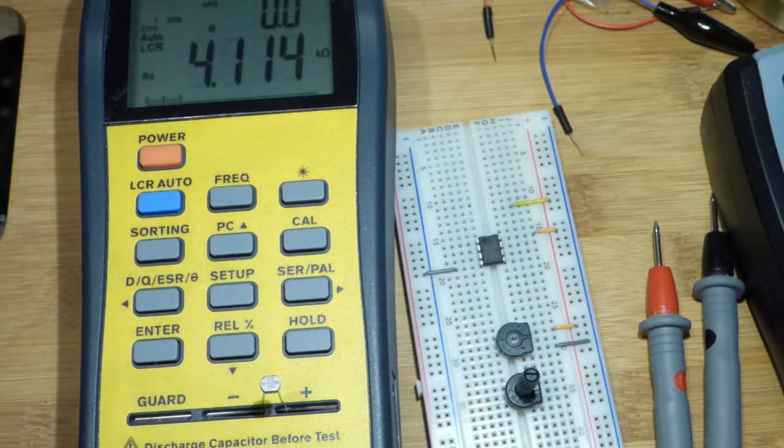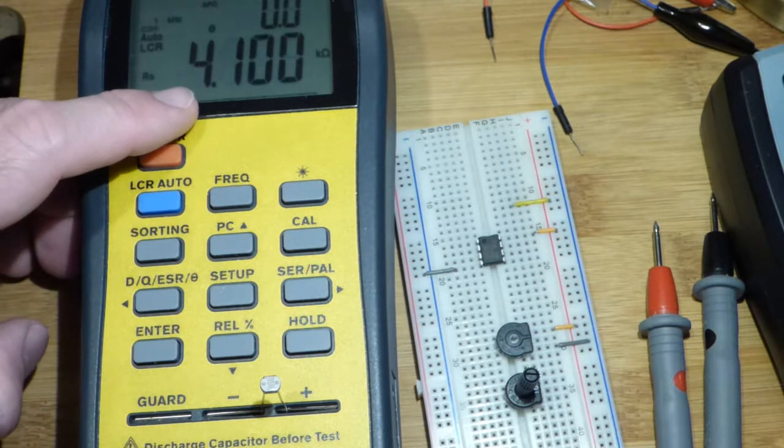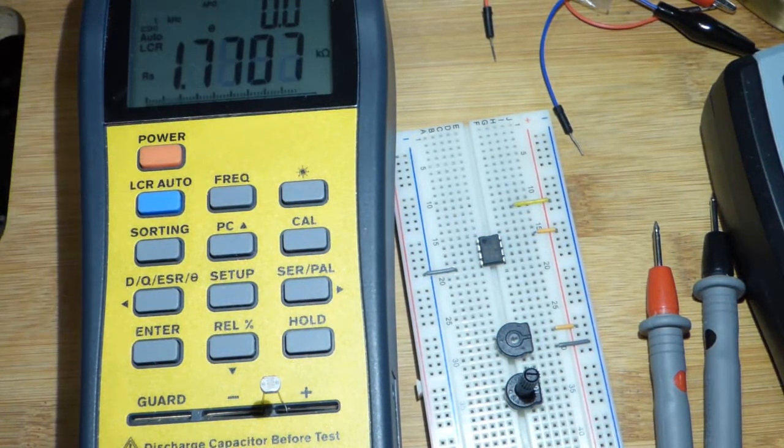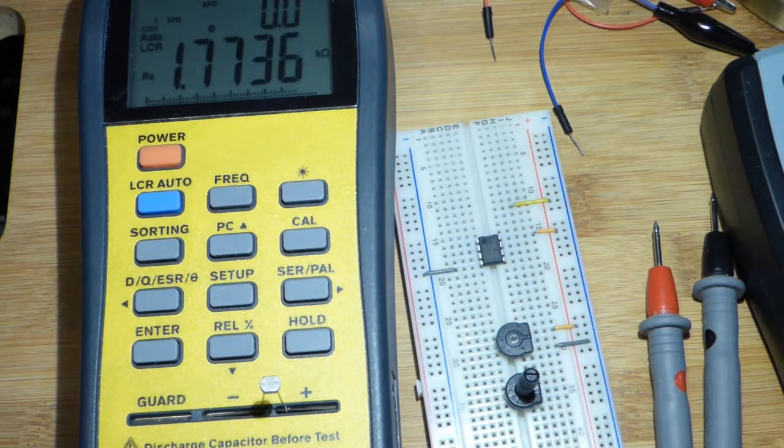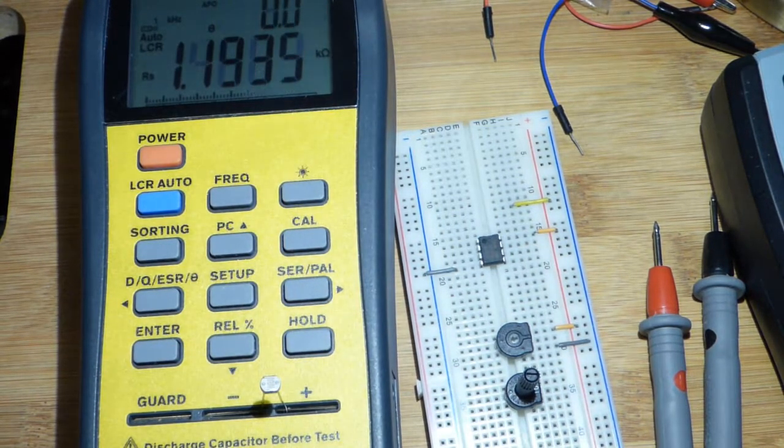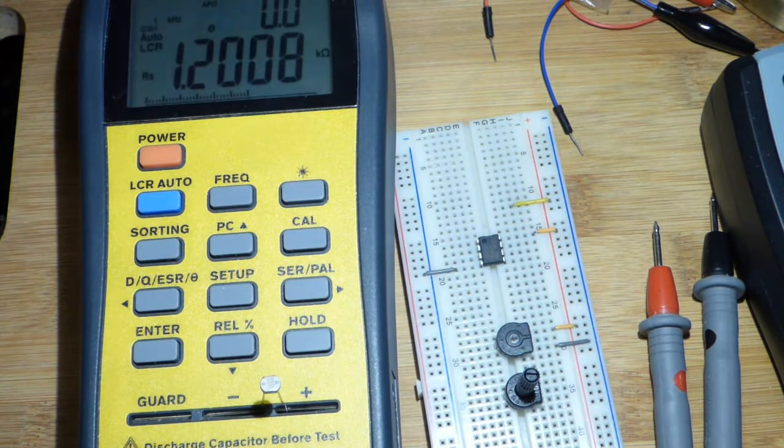And there with the lamp at the lowest setting we have 4 kilo ohms. Higher setting, the brighter the light, 1.7 kilo ohms. Even brighter, 1.2 kilo ohms.